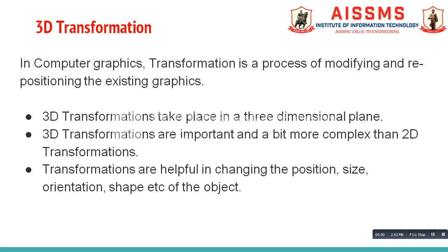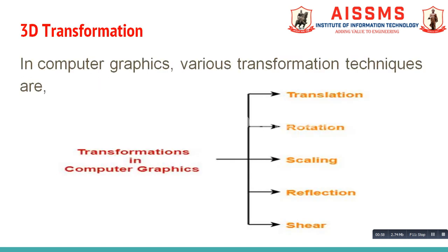Transformations are helpful in changing the position, size, orientation, and shape of the object. In computer graphics, various transformation techniques are translation, rotation, scaling, reflection, and shear. In this video, we are going to study 3D translation in detail.